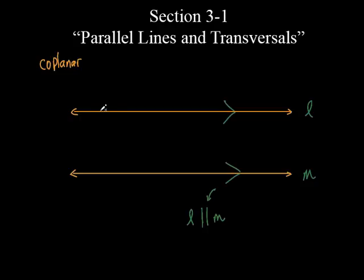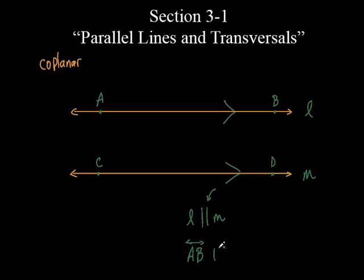If I wanted to, I could have labeled each line with two points instead. Let's call these points A and B on the top line, and C and D on the bottom — just review from the first chapter. So I could say line AB is parallel to line CD, putting the line symbol over top of each. That's another way to name the lines.